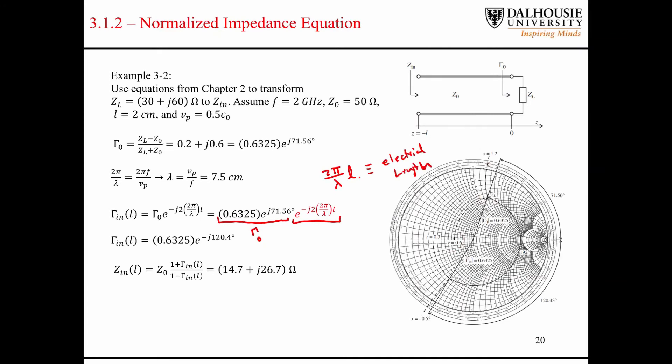So how does this look on the Smith chart? Well, we plot our reflection coefficient at the load. It has a certain magnitude that's shown here, and it has a certain angle of 71 degrees.